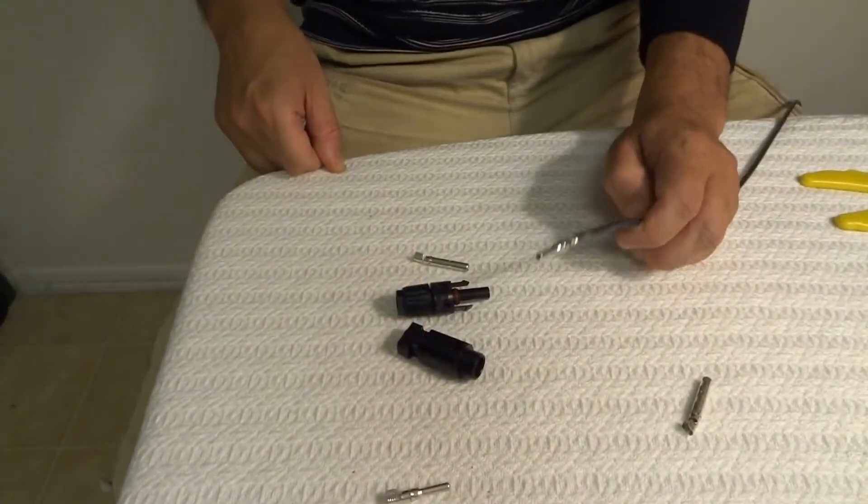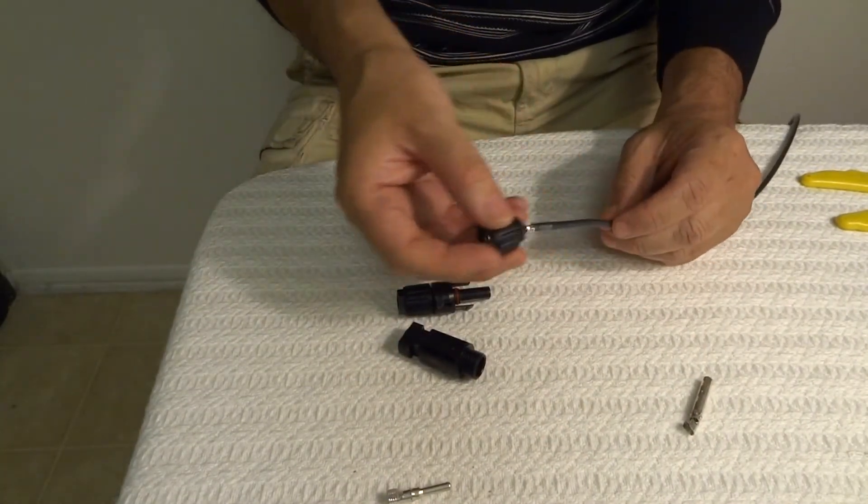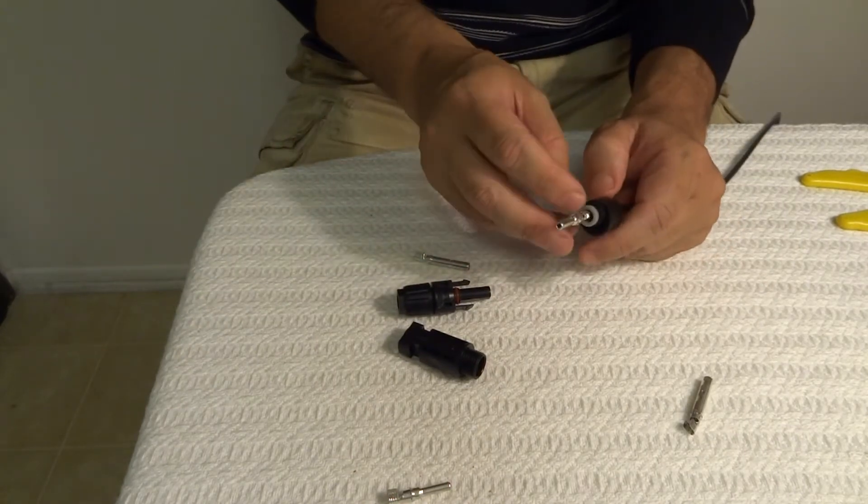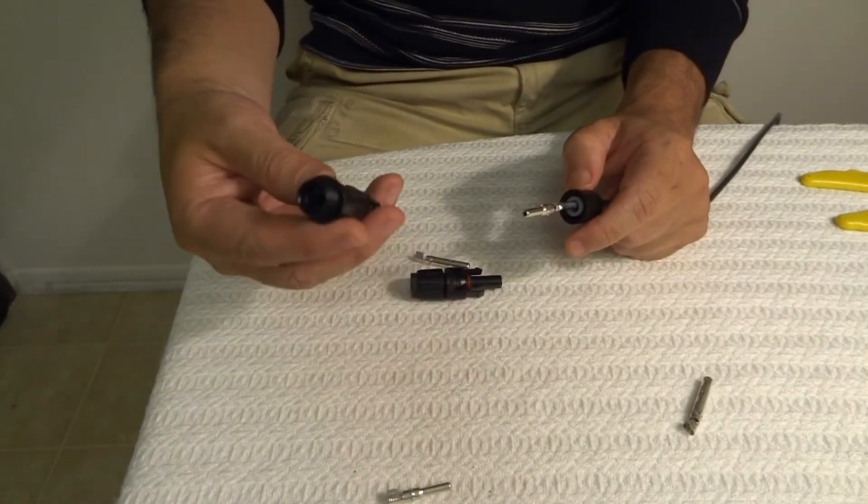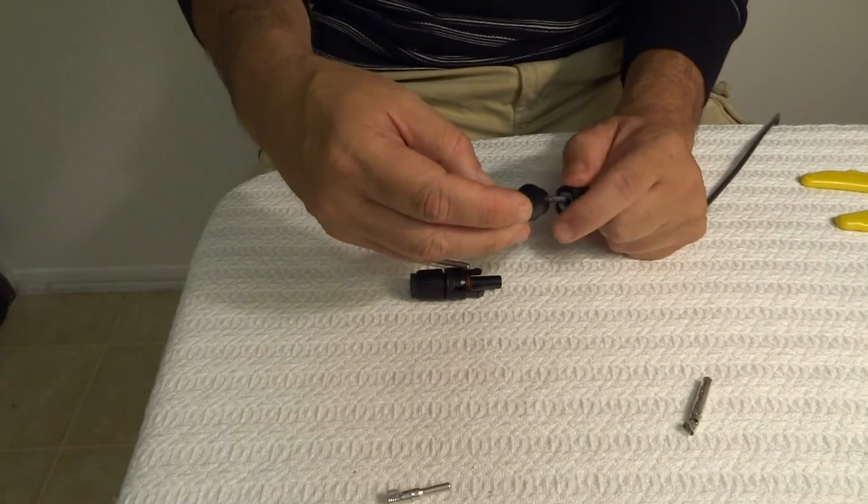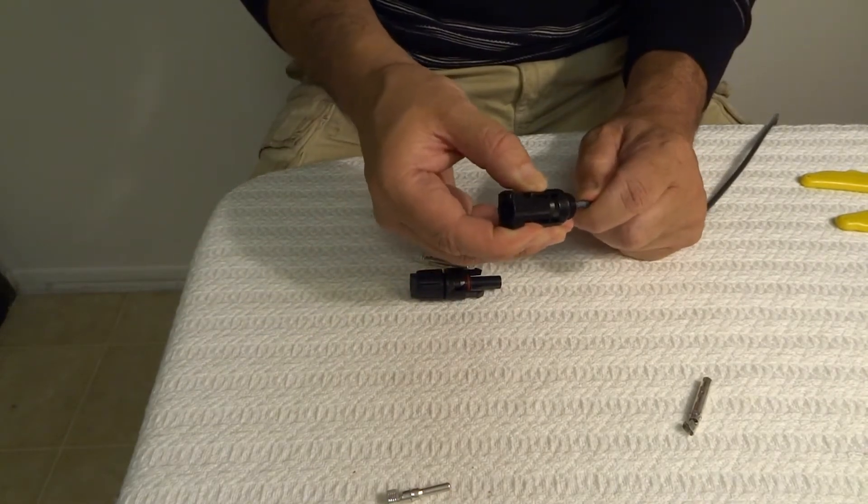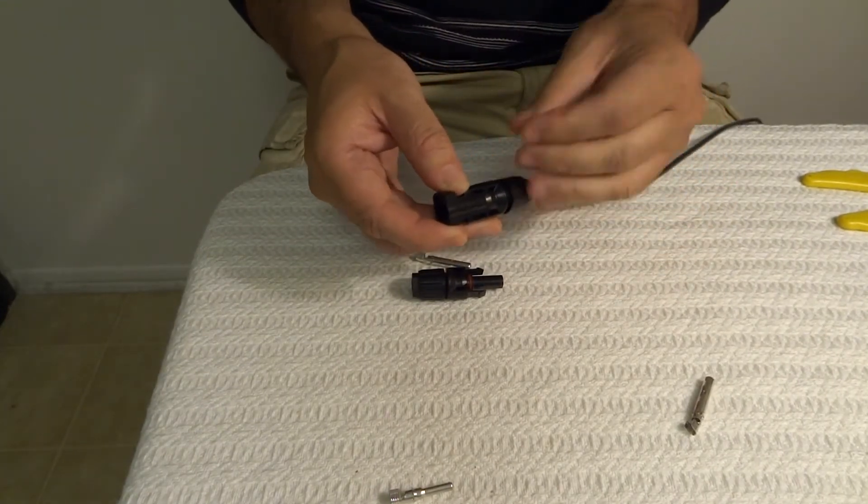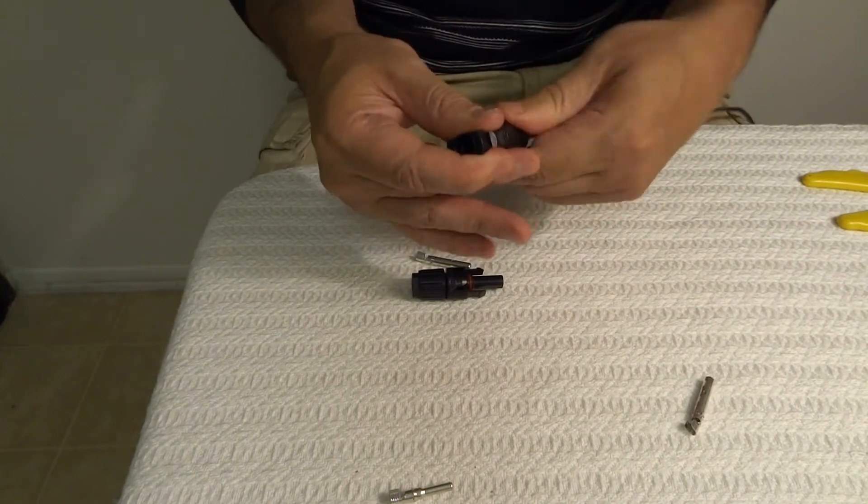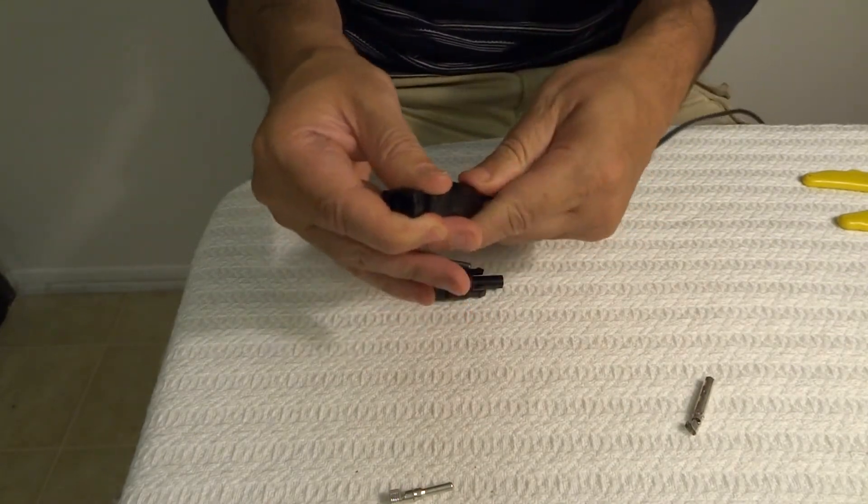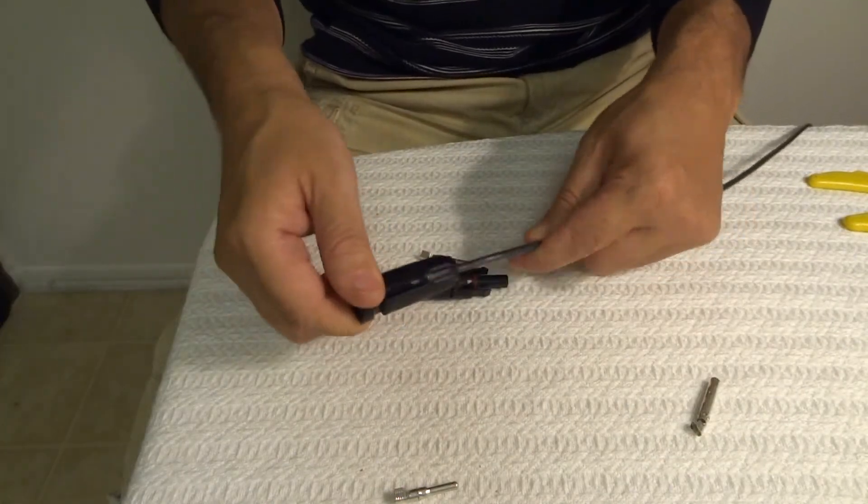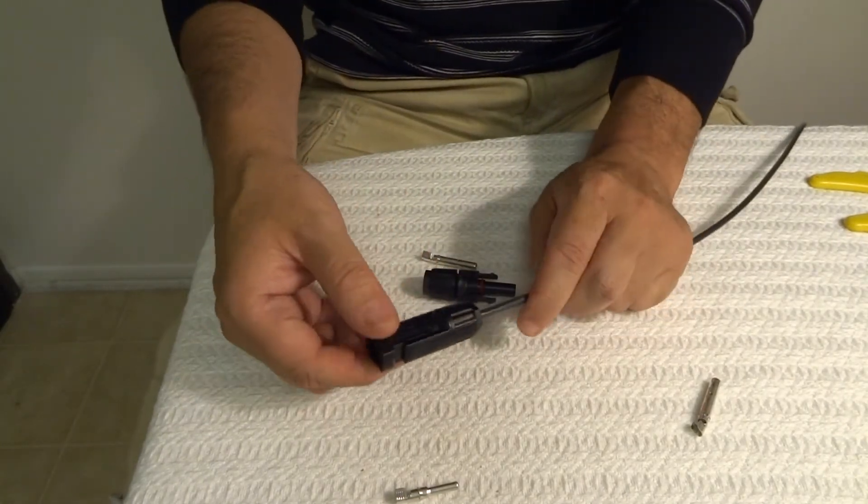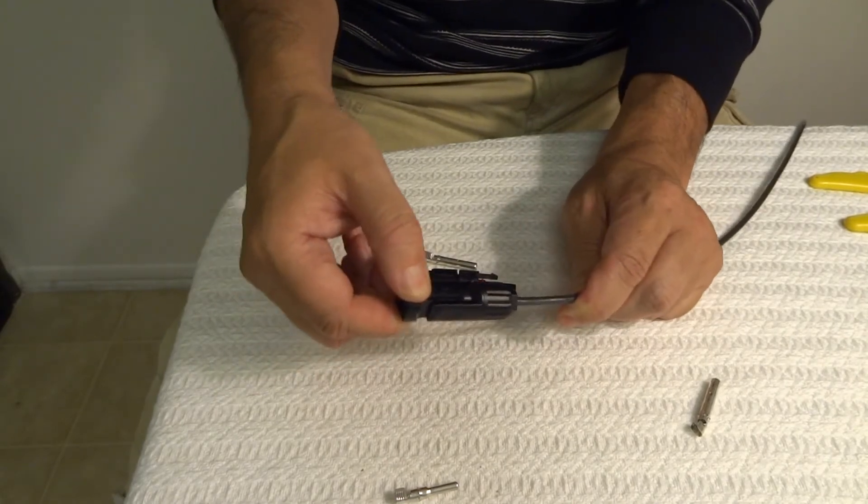So now I'm going to connect the male terminal. This is it right here. I'm going to put it on and you're going to try to hear a click once it's on. And then you just tighten it up. There it is. I've now made my male side MC4 connector.